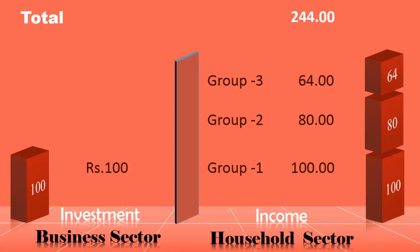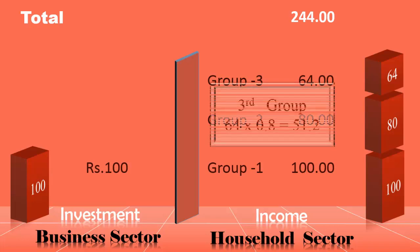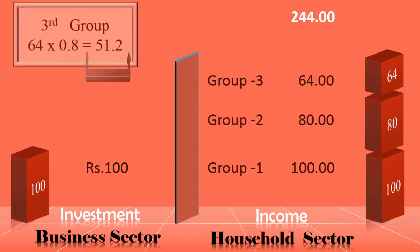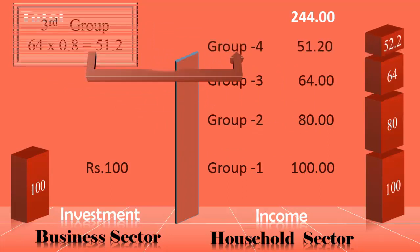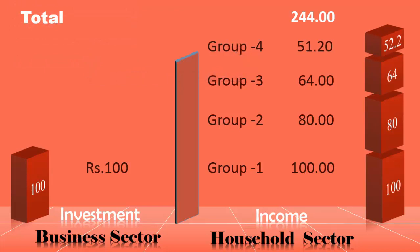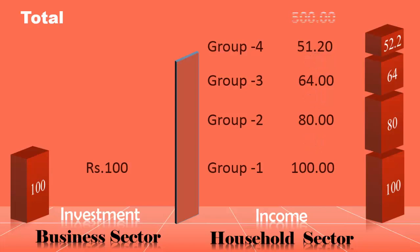They spend 80% of this. The income of the fourth group is 51.2 crores. This process will go on and on till the created income becomes too small to be used by another group. If we add up all created incomes in all the rounds, we get a total of 500 crores. This is the process of the Multiplier.